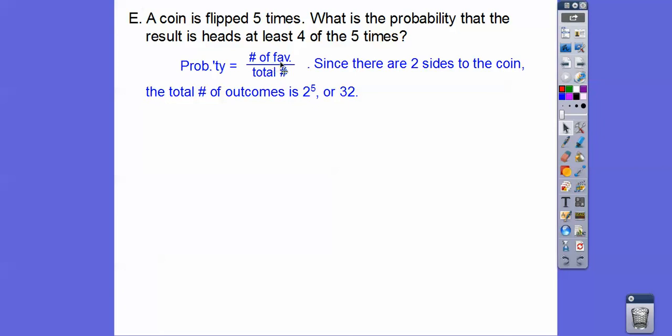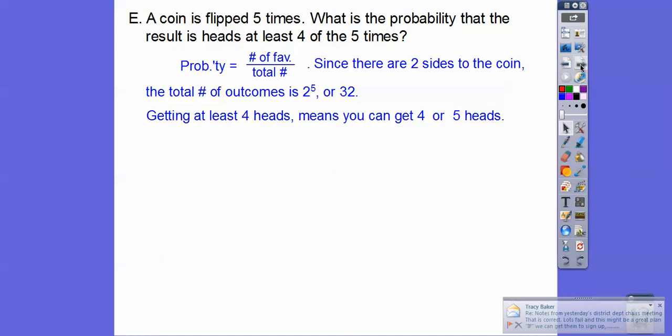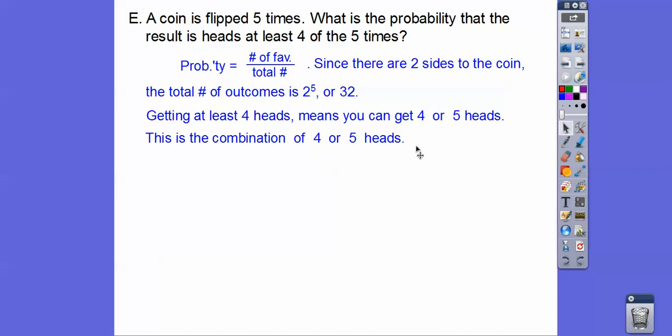For our favorable outcomes, you're getting a result of a heads at least four of the five times. That means we can get four heads. Getting at least four heads means we can get four heads or five heads. Remember, or means plus. So we're going to do, this is a combination of four or five heads on these five flips. So this is going to be 5C4, this is going to be 5C5.